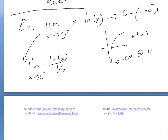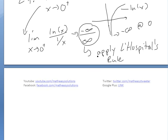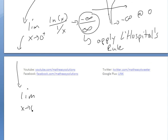Now ln(x) approaches negative infinity, and 1/x as x approaches 0 from the right approaches positive infinity, so we have the indeterminate form −∞/∞, and we can apply L'Hôpital's Rule. We take the derivative of the top and bottom. The derivative of ln(x) is 1/x, and the derivative of 1/x using the power rule is −1/x².